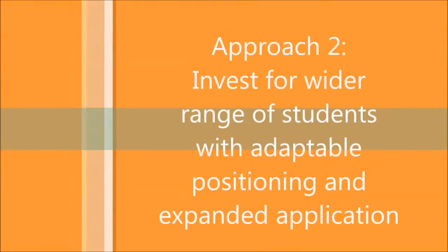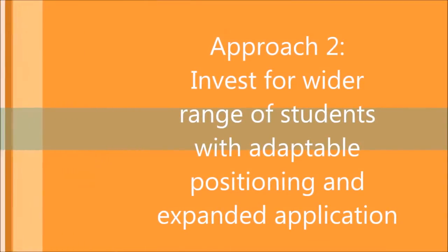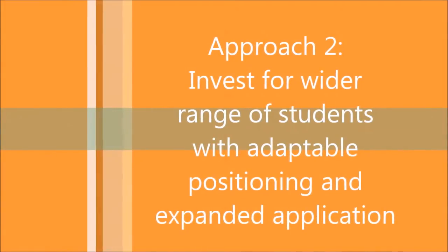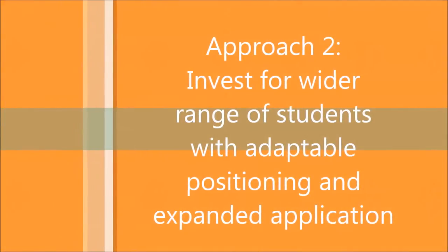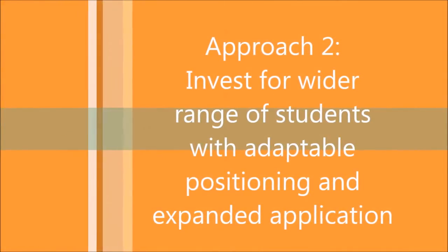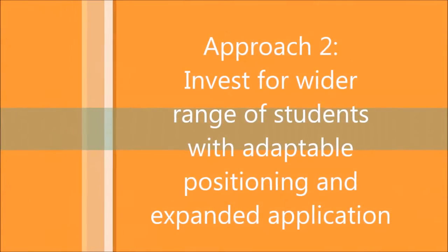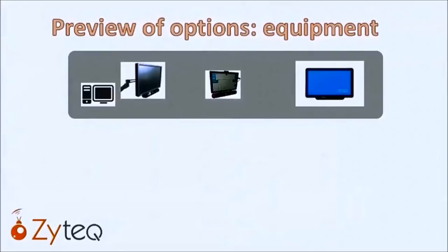The second approach is to equip the school with a system or systems that will be suitable for a wider range of students. This is achieved with equipment that can be more flexibly set up to accommodate individual seating and positioning, and can be further expanded with additional software suites, and the use of the IntelliGaze eye gaze camera, which has future potential for applications beyond early learning. There are three concepts presented here, and by the end of this webinar I hope you will understand the pros and cons of each.